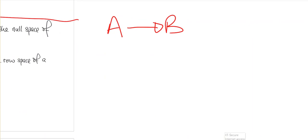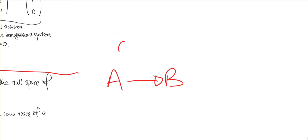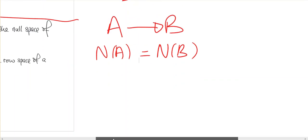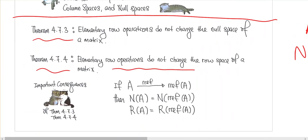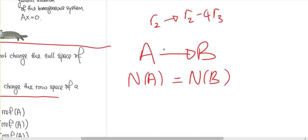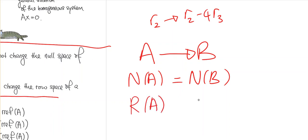...say for example you change the second row of the matrix A by taking the second row minus four times the third row — if you do that, then the null space of A and the null space of B are going to be the same. And the next theorem says that elementary row operations also do not change the row space of this matrix. So since we are doing row operations to get from A to B, the row space of A and the row space of B are actually the same.